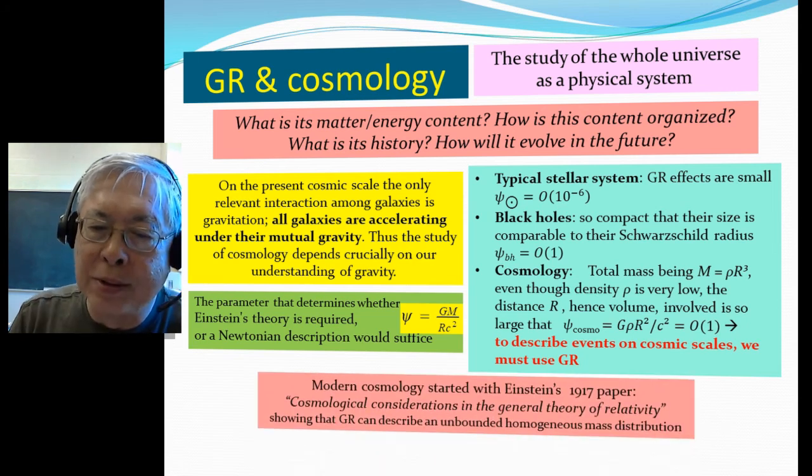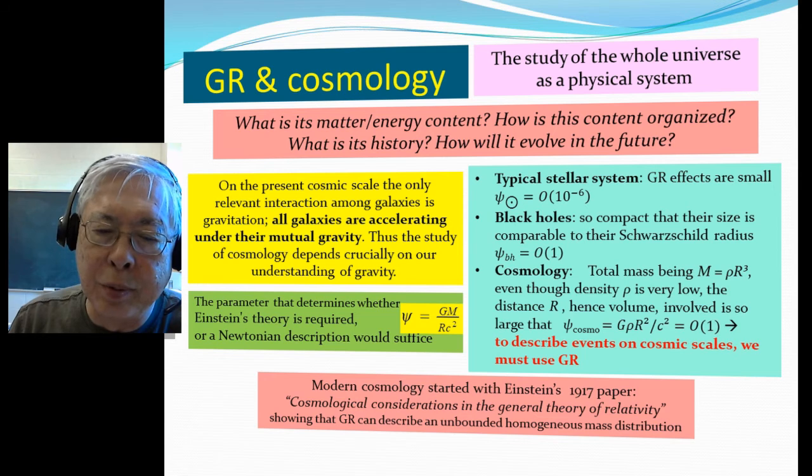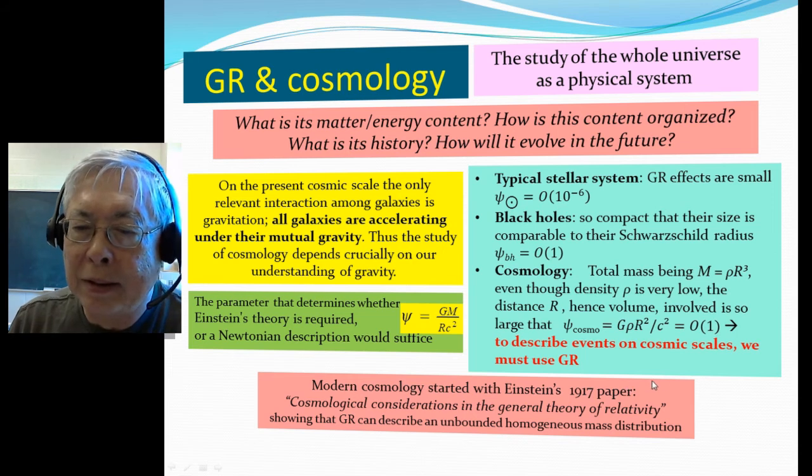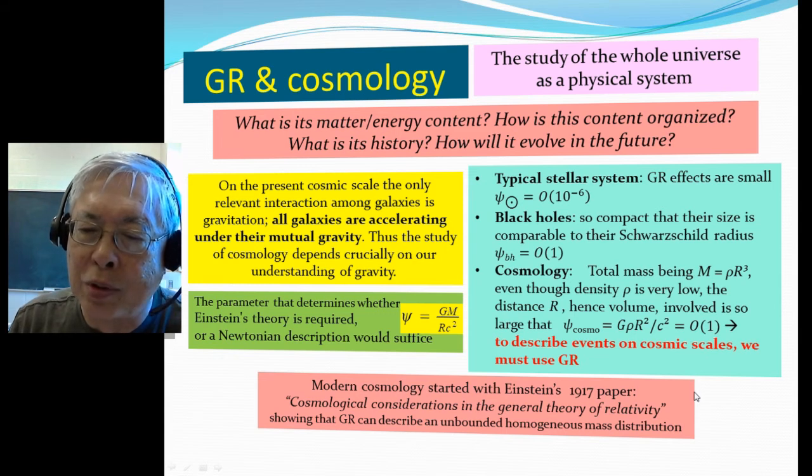Modern cosmology starts with Einstein's 1917 paper. Remember his GR paper published in 1916, which titled the cosmological consideration in the general theory of relativity, showing that GR can describe an unbound homogeneous mass distribution. So, this is really, ever since then, all the cosmological studies are carried out in the framework of GR.